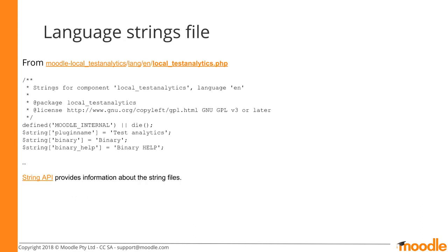All strings should be implemented using a default and English language file. At minimum, define your plugin name. As you add components, name them here and provide help strings. This example is taken from the Test Analytics plugin provided on GitHub. The String API documentation provides more information about these string files.